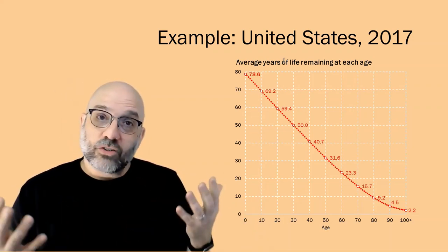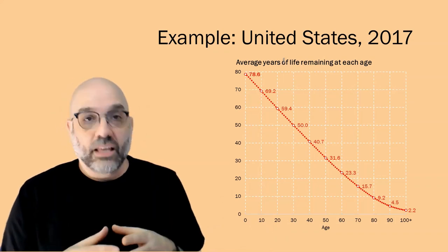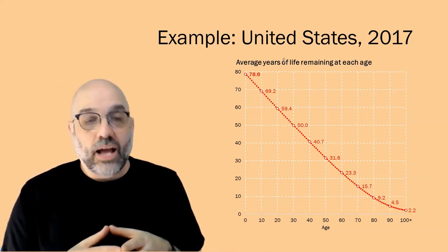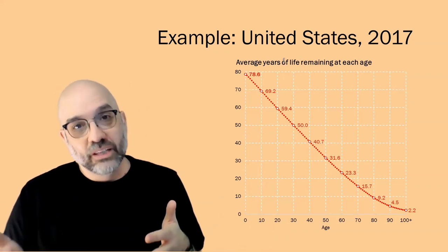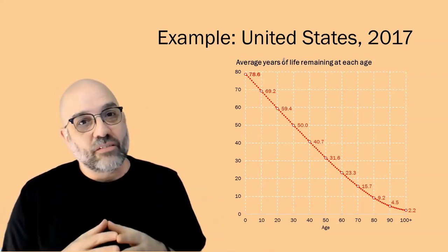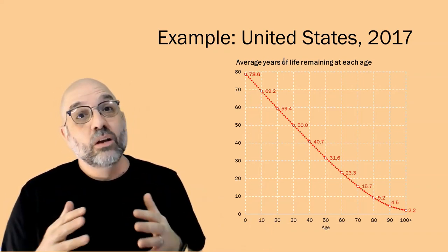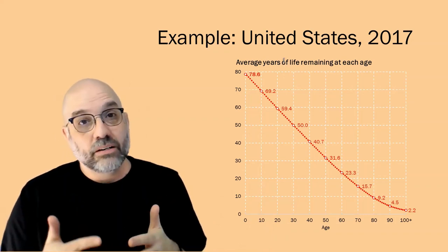This is why it's not correct to say, I'm 75 years old, I live in a society where the life expectancy is 78.6, therefore I have 3.6 years left to live. Once you've made it to age 75, your life expectancy is considerably higher than the life expectancy at age zero.